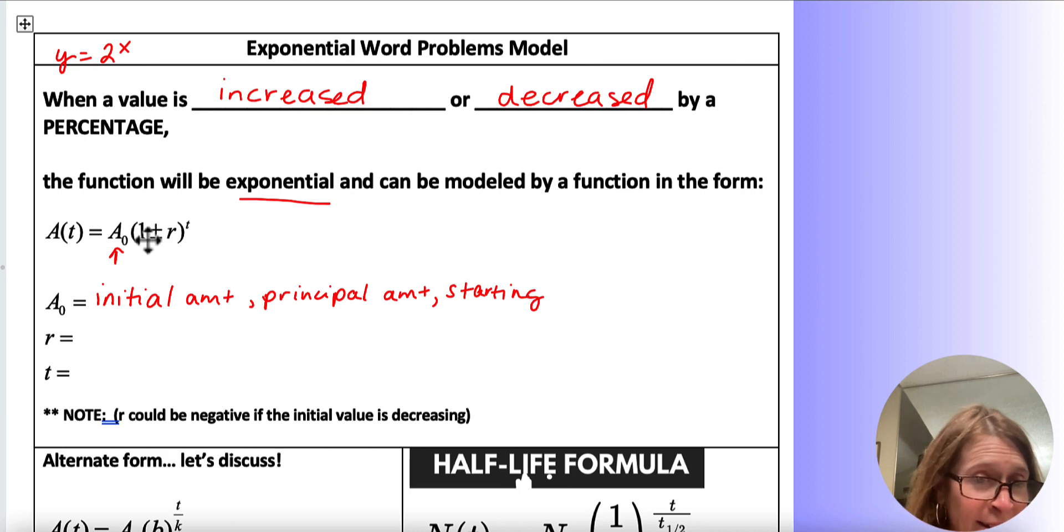There's that 1. So you're going to do 1 plus or minus because exponential, we know, can decay. So it could go down or could decrease. So it would be 1 plus or minus r. r is the rate. And we always want to write it as a decimal, written as a decimal. And then t is time.